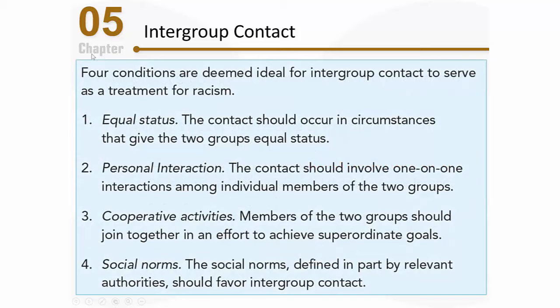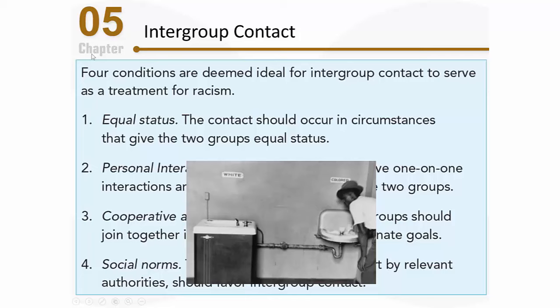When these four conditions are met, intergroup contact will essentially serve as a treatment for prejudice and racism. The first seems pretty obvious: we need to have equal status. The groups have to come together within an environment in which they're all treated equally and with respect. Of course, that's not how things were during the era of segregation. We're looking for a situation in which kids of different racial groups come together where they all have equal status and equal rights — equal access to the same types of instructors and classrooms, and more importantly, access to each other.